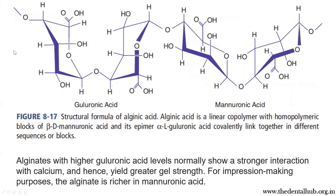Alginic acid is a linear copolymer of guluronic acid and manuronic acid. Alginates with higher guluronic acid bind more strongly to calcium — their affinity to calcium is higher and the reaction occurs faster. Therefore, commercial alginates for impression making use manuronic acid.